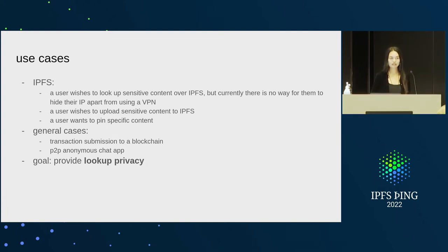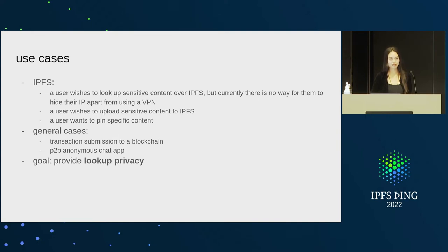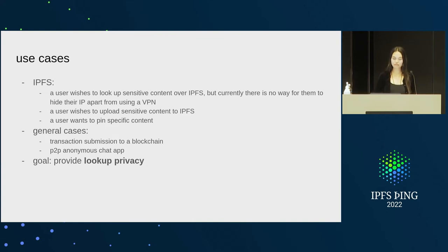Similarly, for users who want to upload or pin data to IPFS, you'd ideally want privacy for sensitive content. There are also general cases — if we have privacy layers in the P2P stack, they could apply to other scenarios like transaction submission for a blockchain. There's prior research on this like Dandelion. Blockchains like ETH2, Polkadot, and Filecoin use LibP2P. There's also the generic P2P chat use case. For this presentation, I'll focus mostly on lookup privacy, or what was previously called reader privacy — essentially preserving privacy for someone looking something up in the system.